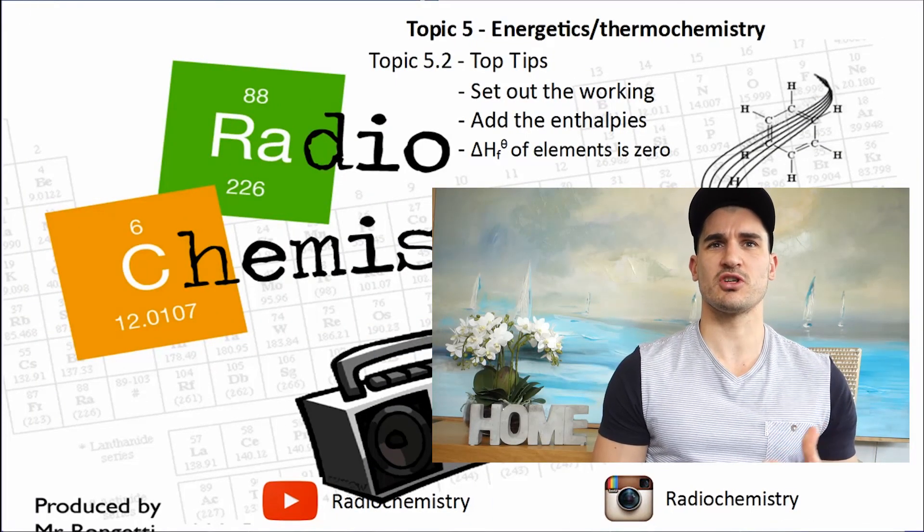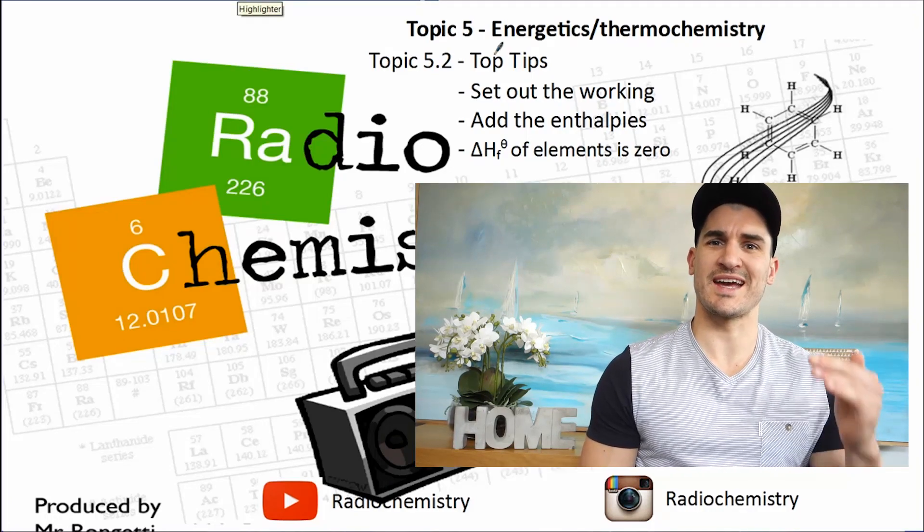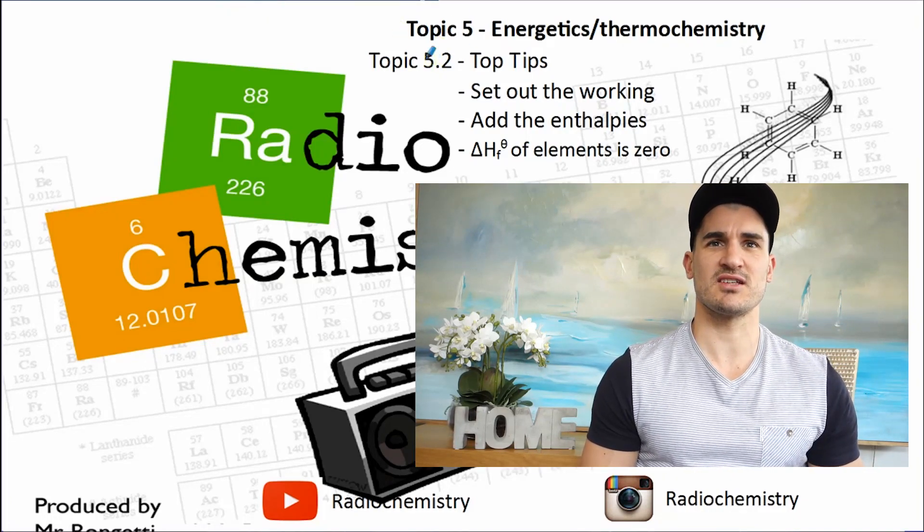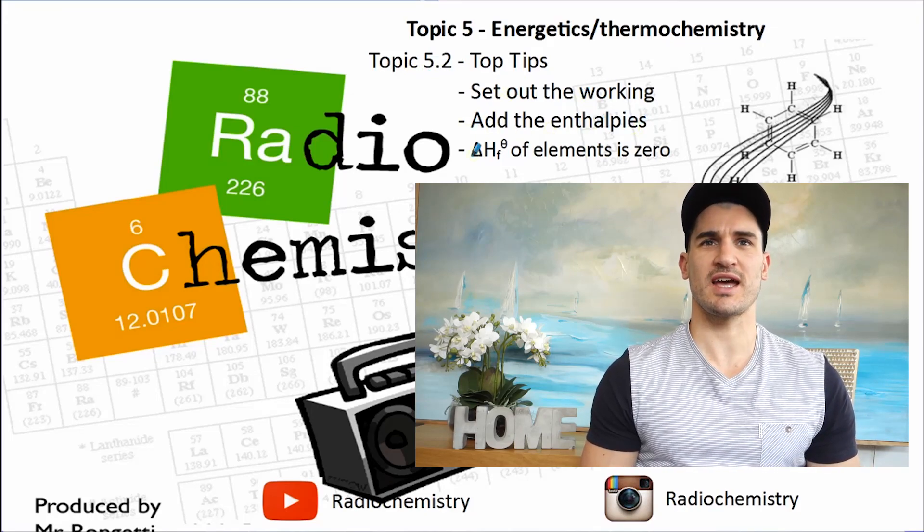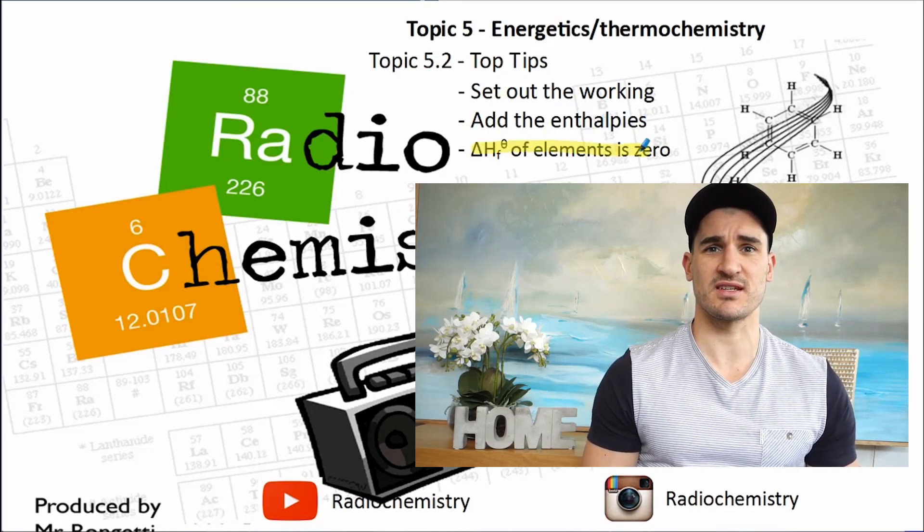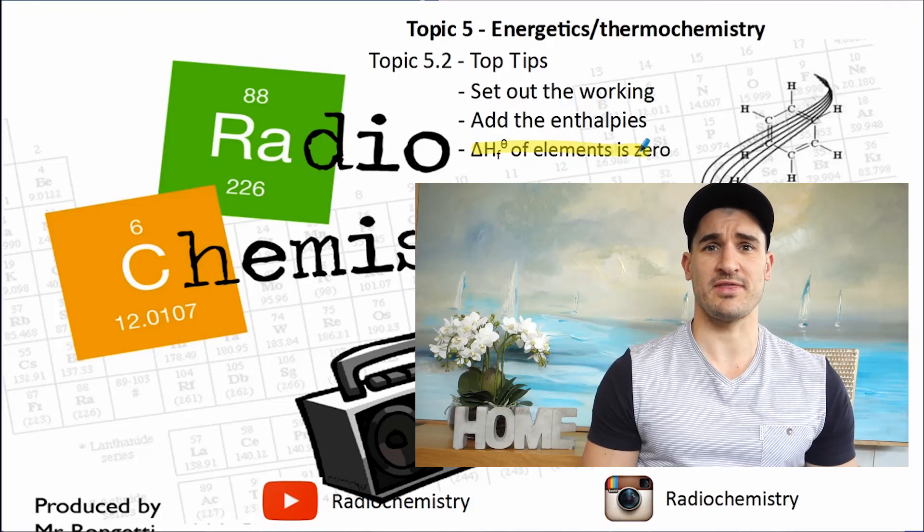Okay, topic 5.2, Hess's law, some top tips. Set out the working out, set out the equations. It's the easiest way to see it. Remember to add the enthalpies and remember that the delta H of elements is zero. Quite a few students will forget that. Thanks for watching guys. Don't forget, drop a like on the video, subscribe for more, and I'll see you next time.